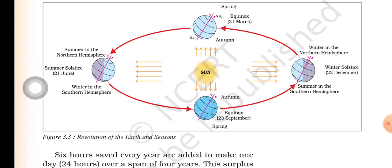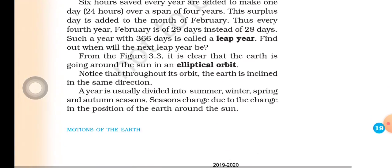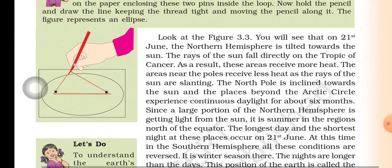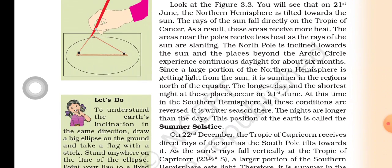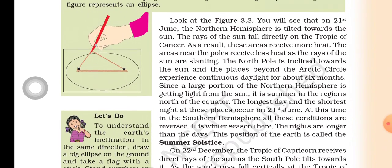You will understand how the seasons occur throughout the year — summer, winter, spring, and autumn. On 21st June, the northern hemisphere is tilted towards the sun. The rays of the sun fall directly on the Tropic of Cancer. As a result, these areas receive more heat, while areas near the poles receive less heat.